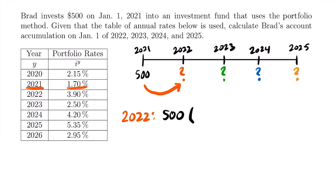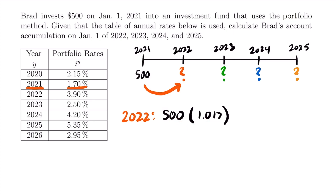So in 2022 we will have $500 times an accumulation factor for one year using the portfolio rate of 1.7%. One plus 0.017 equals 1.017. So if we multiply 500 by 1.017, we accumulate that $500 for one year from 2021 to 2022. 500 times 1.017 equals $508.50. That is the accumulated value of that $500 at the beginning of 2022.